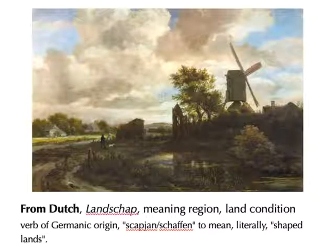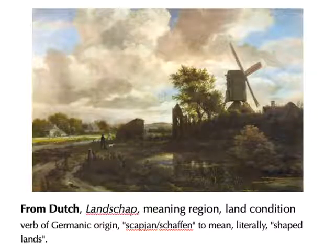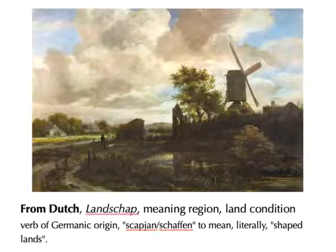The meaning originally from the Dutch means 'region or tract of land.' The term was first recorded in 1598, and it was borrowed from Dutch painters' terms. You may know, if you studied art history, that in the 16th century Dutch artists were actually masters of the landscape genre.